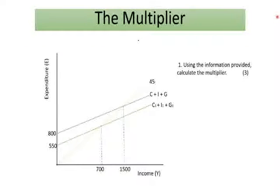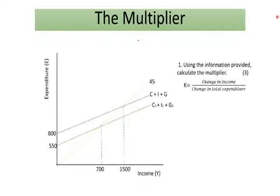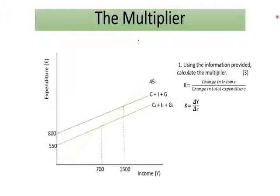The first question is: using the information provided, calculate the multiplier, and you'll get three marks. The first part of answering this question is to write the formula. The multiplier is equal to change in income divided by the change in total expenditure. You can also write it in symbols — that is still fine. Then the next step is to substitute those symbols using the figures that we are given.